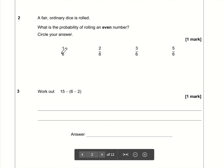Moving on to question number two. A fair ordinary dice is rolled. What is the probability of rolling an even number?